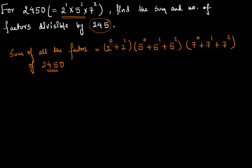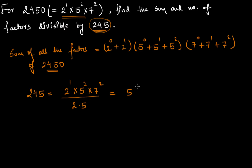But we need the sum of only those factors which are divisible by 245. The prime factorization of 245 can be found by removing a 10 from the prime factorization of 2450. Since 2450 = 2^1 × 5^2 × 7^2, dividing by 10 (which is 2 × 5) gives us 5^1 × 7^2. So all factors of 2450 divisible by 245 must contain at least one 5 and a 7^2, because the prime factorization of 245 is 5 × 7^2.